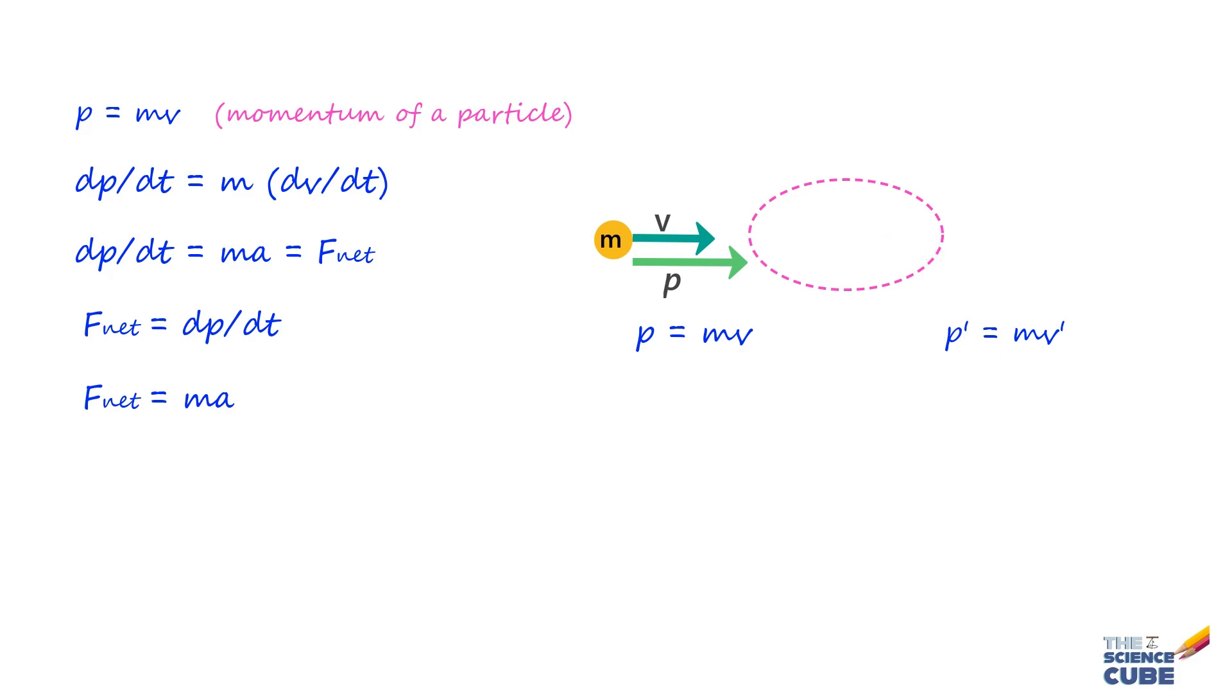Because if net force is set to 0, then P has to be a constant for dP/dt to become 0.